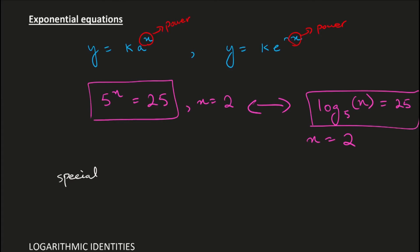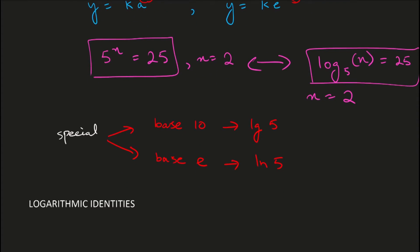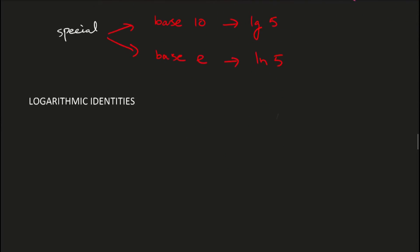There are two special types of logs to know. The first is log to base 10, written as lg — so log base 10 of 5 is simply written lg 5. The second is the natural log, which has base e, written as ln — so log base e of 5 is written ln 5. These are the two special logs you'll use to rearrange most equations.